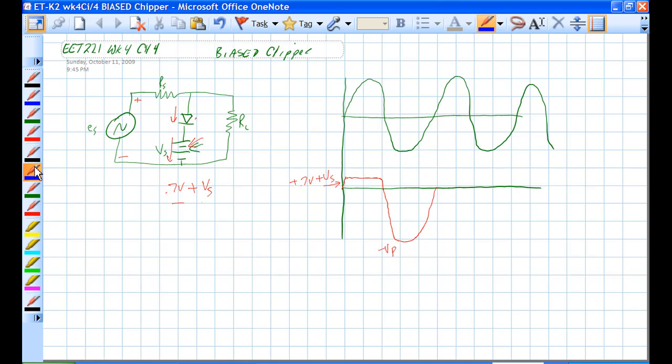Because when this is minus and this is plus, this guy is reverse biased. So there's no current flow here. We have current flow through here though, so that is what causes this minus V peak.